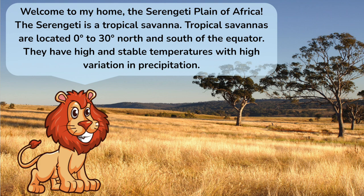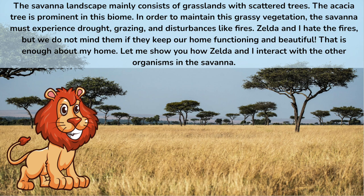Welcome to my home, the Serengeti Plains of Africa. The Serengeti is a tropical savanna. Tropical savannas are located 0 to 30 degrees north and south of the equator. They have high and stable temperatures with high variation in precipitation. The savanna mainly consists of grasslands with scattered trees. The acacia tree is prominent in this biome.